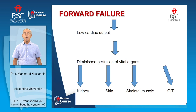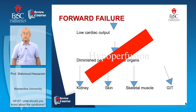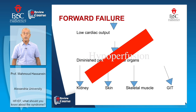The other type is forward failure, where there is low cardiac output, which leads to diminished perfusion of vital organs like the kidney, the skin, skeletal muscle, and GIT. Forward failure will lead to hypoperfusion and represents about 10% of cases of heart failure. An example of forward failure is a patient who develops acute myocardial infarction.